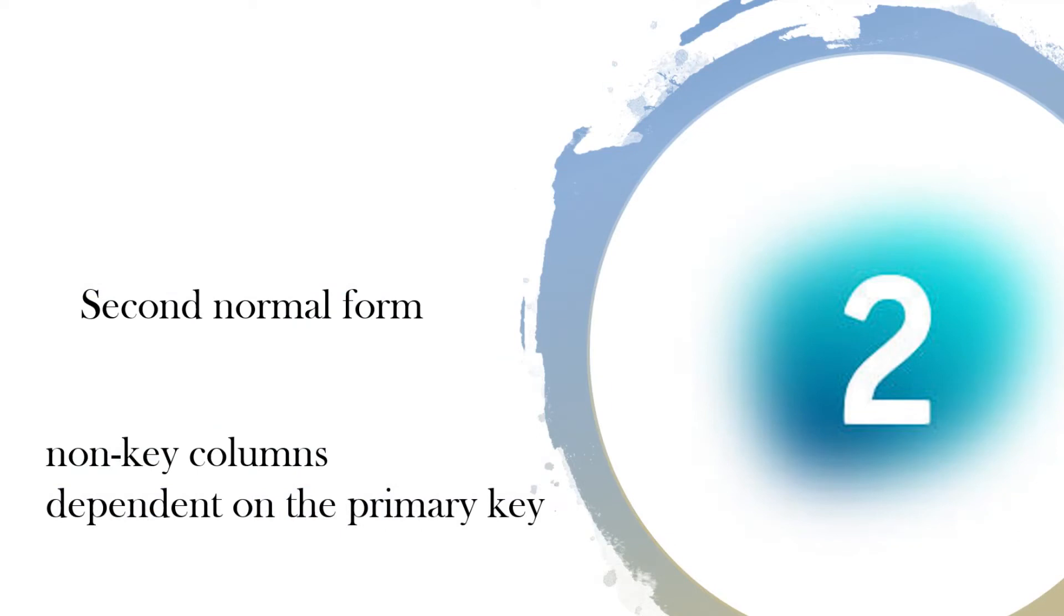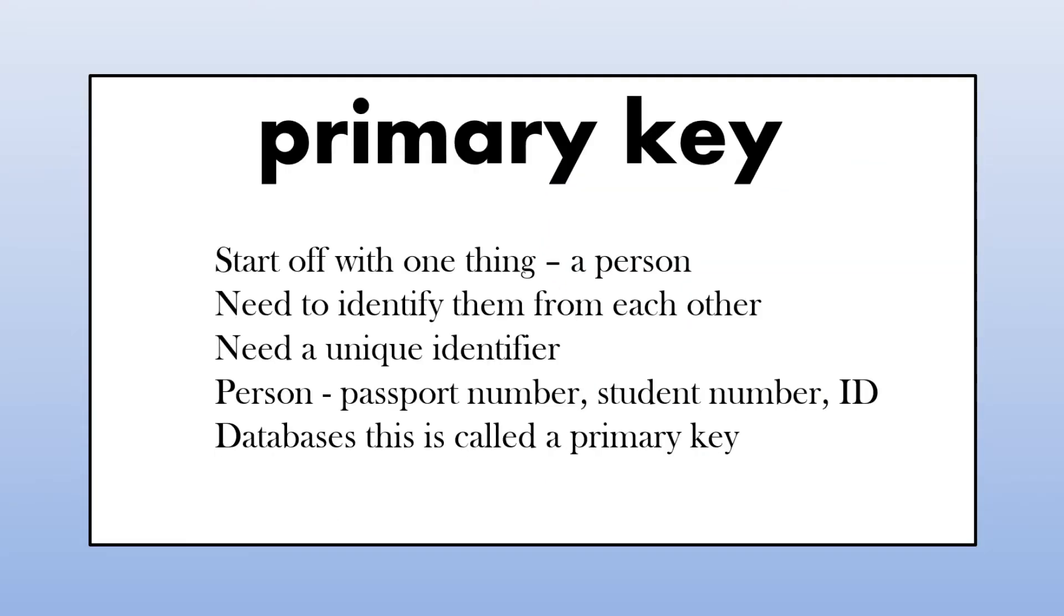Second normal form: non-key columns are dependent on the primary key. The primary key - if you think of one thing, a person, a book, or an item - we need to identify them. For a person, we can identify people by their passport number, student number, social security number, or some membership number. We can do that with a book or any type of item, an invoice ID or order ID, for example. That's what we would call a primary key in a database. It's unique for each row.